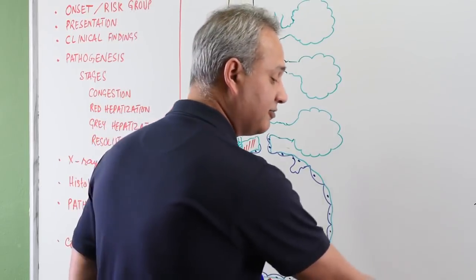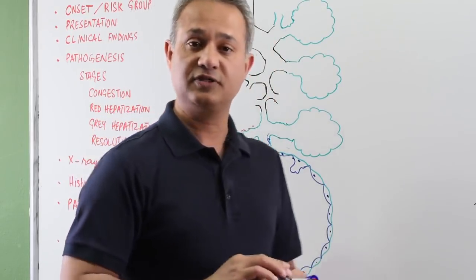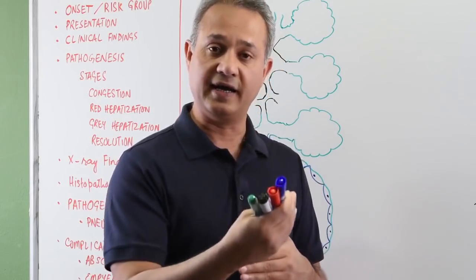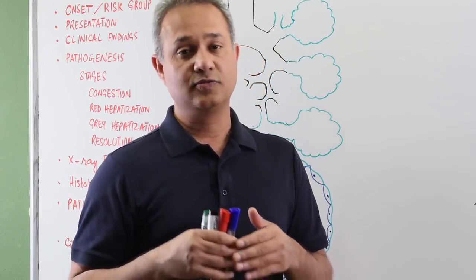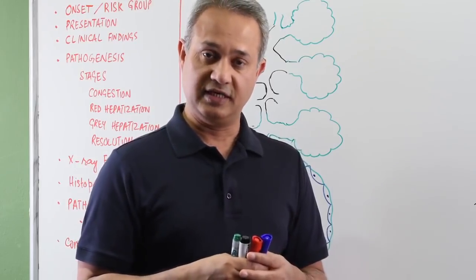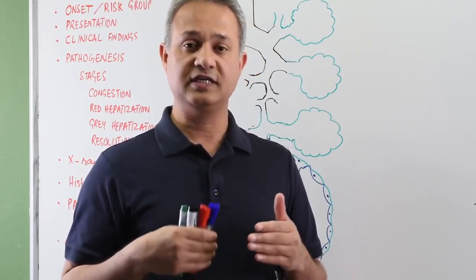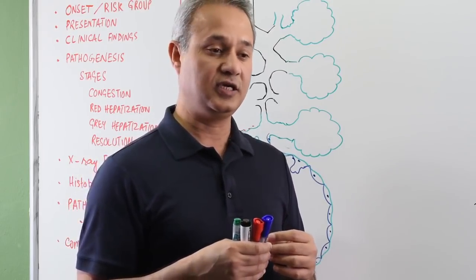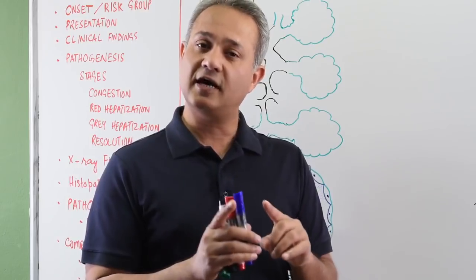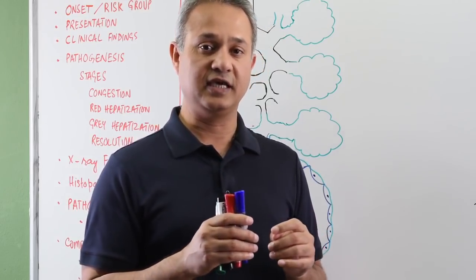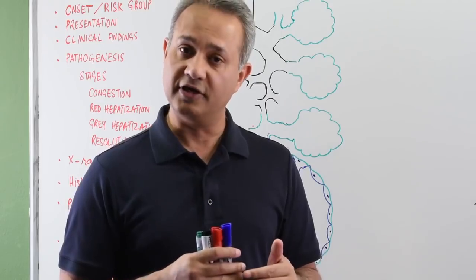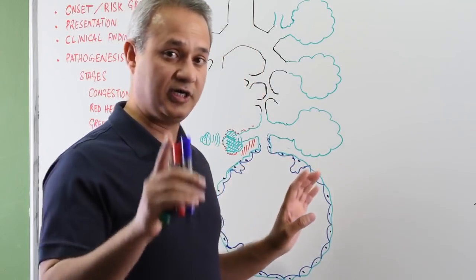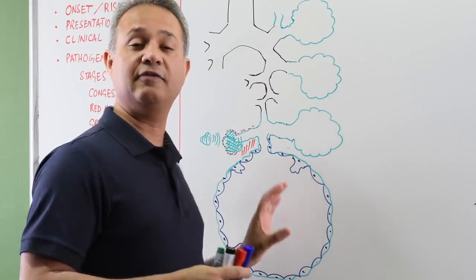Because sound waves are easily conducted through fluid, bronchophony will also be present — sounds heard through the stethoscope will be louder than normal. Similarly, egophony will be present: you place the stethoscope on the chest and ask the patient to say 'ee,' and it sounds like 'a' — that change is called egophony. Both bronchophony and egophony are signs of consolidation, which means fluid-filled alveoli.